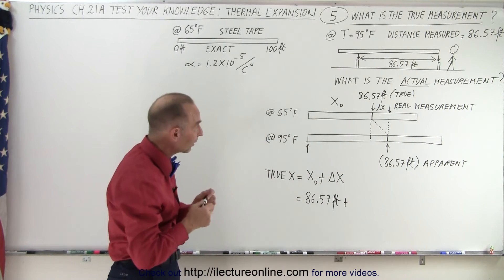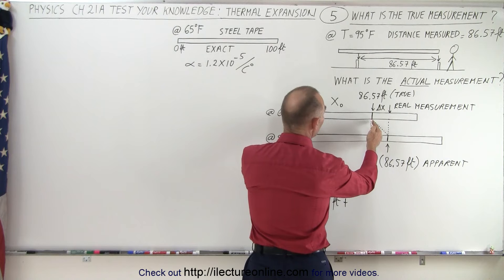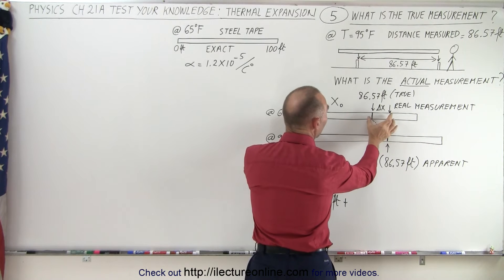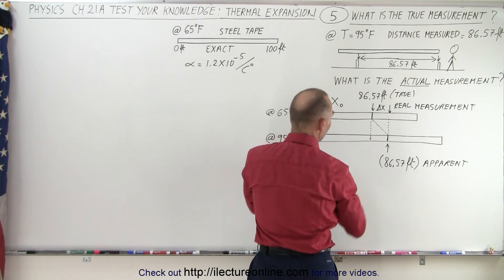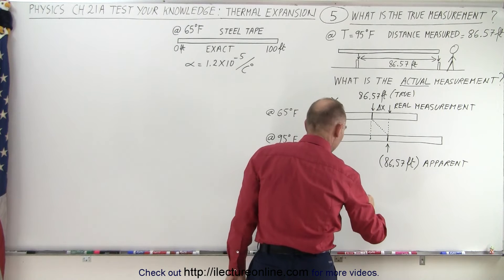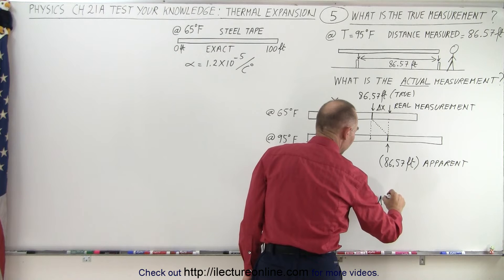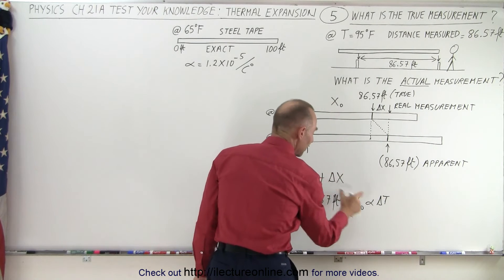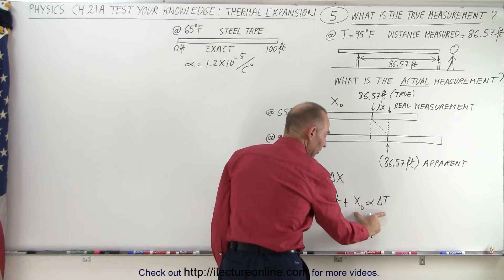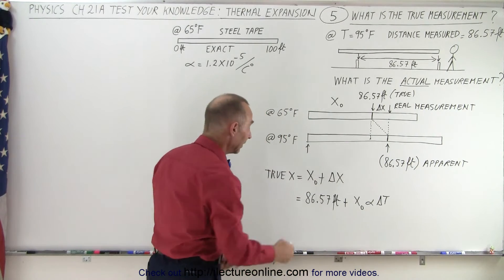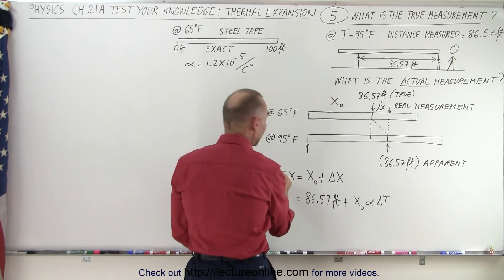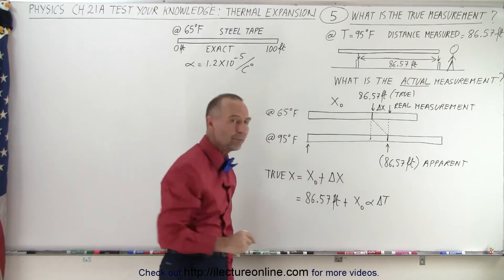Now how much is the delta x? Well, we take this piece right here, and we have an expansion due to the increase in temperature, so it would be x sub naught times the linear coefficient of expansion times delta t. So that would be my delta x. If I figure out what this equals, then I can add those together, and that will give me the true value.